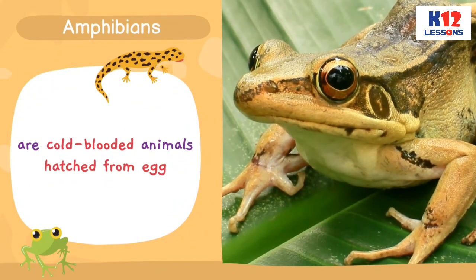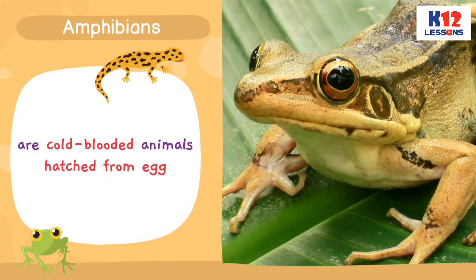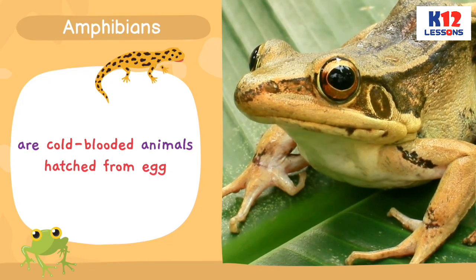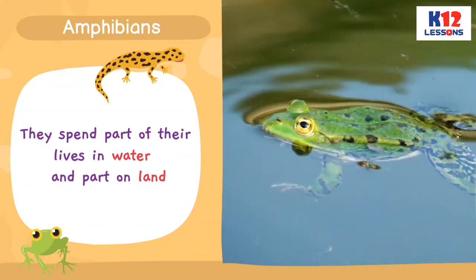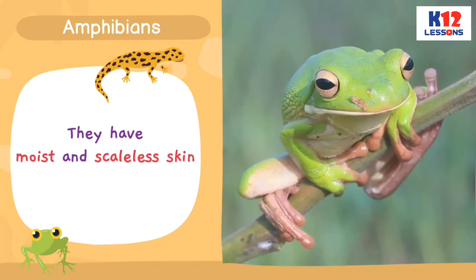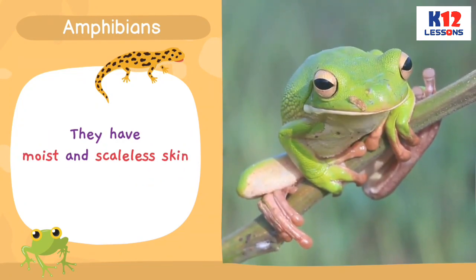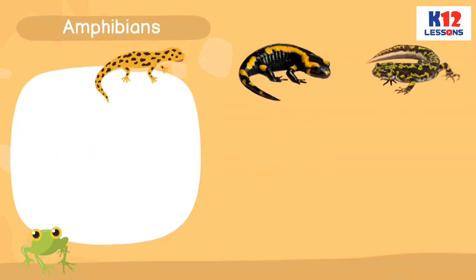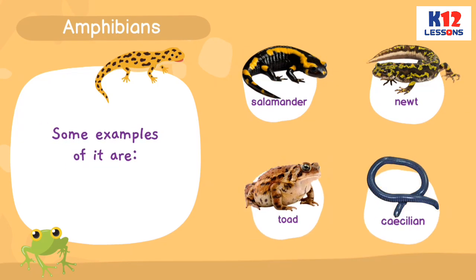Amphibians are cold-blooded animals hatched from egg. They spend part of their lives in water and part on land. They have moist and scaleless skin. Some examples are salamander, newt, toad, and caecilian.